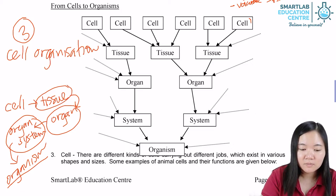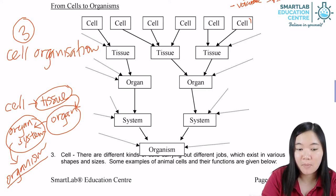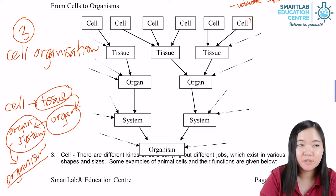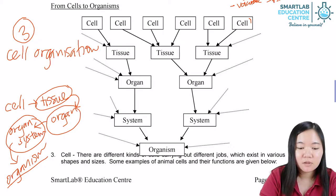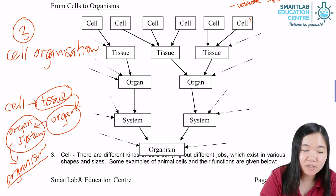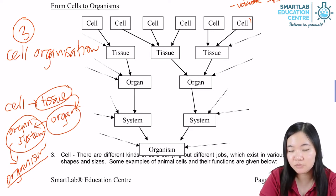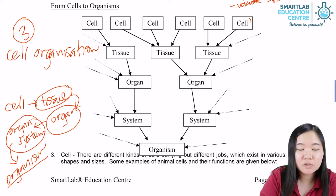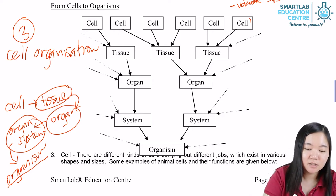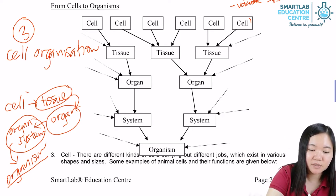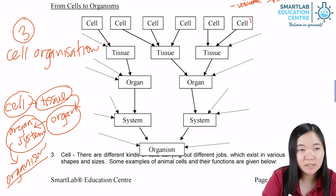Tissue is a tad simpler than an organ. If we look at the stomach, the organ stomach has three layers: the outermost layer, the middle layer — which is made up of muscles — and the innermost layer. Each of these layers is a tissue on its own. Tissue is basically made up of cells of a similar type.